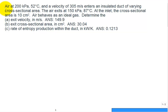So for this problem, we have air at 200 kilopascal and 52 degrees C, traveling at a velocity of 305 meters per second, entering an insulated duct of varying cross-sectional area. The air exits at 150 kPa and 87 degrees C. At the inlet, the cross-sectional area is 10 centimeters squared, and the air behaves as an ideal gas. Determine the exit velocity, the exit cross-sectional area, and the rate of entropy production.